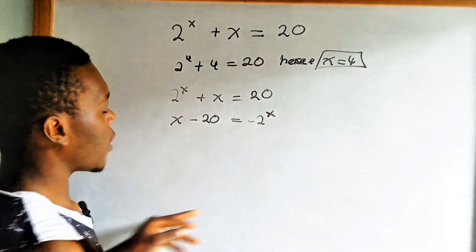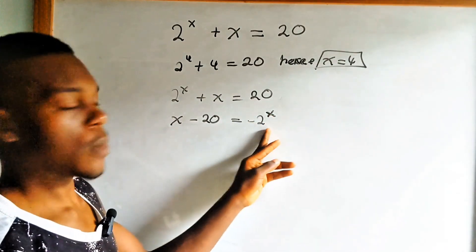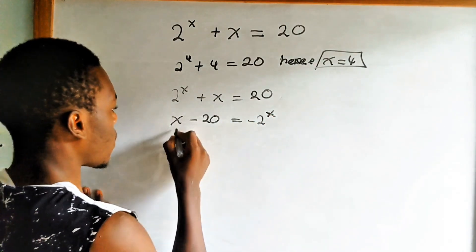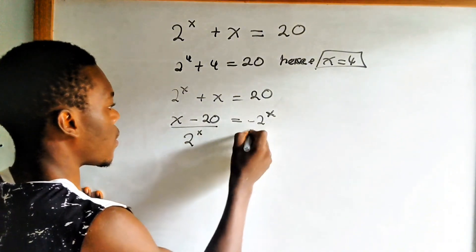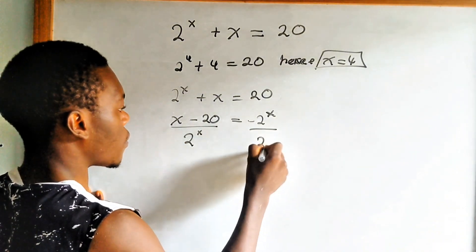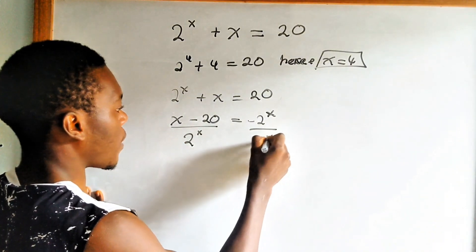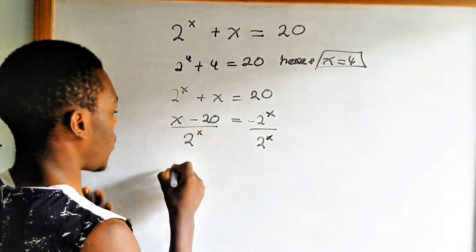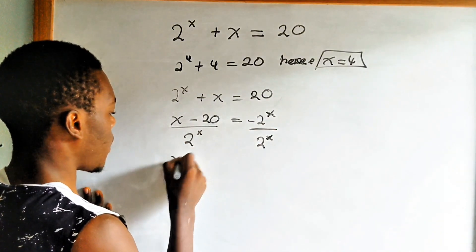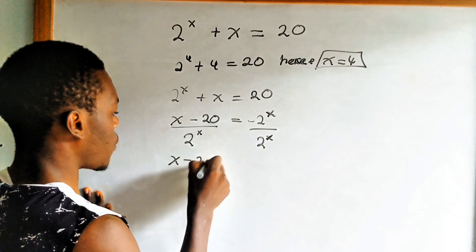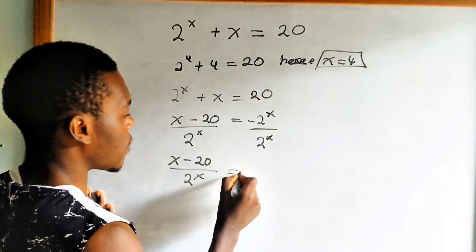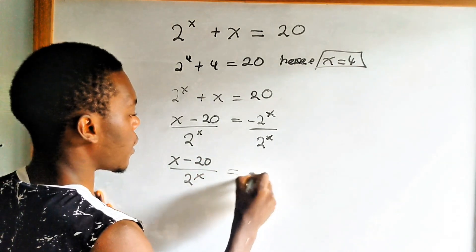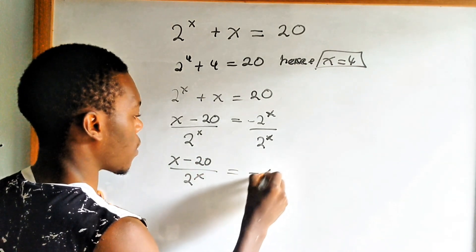We can divide everyone by 2 to the power x. So x minus 20 all over 2 to the power x, all over 2 to the power x, and then you are going to have x minus 20 all over 2 to the power x is equals to negative 1.